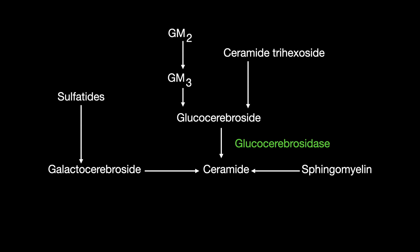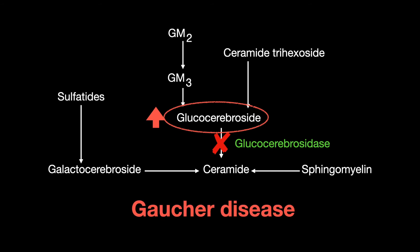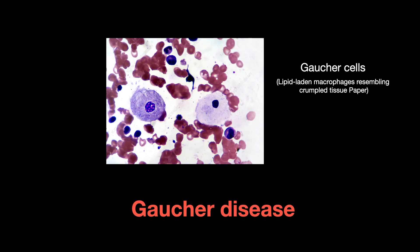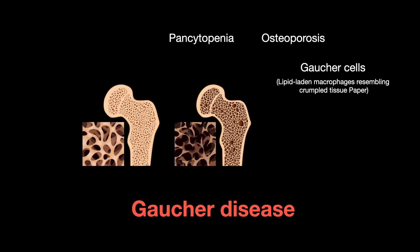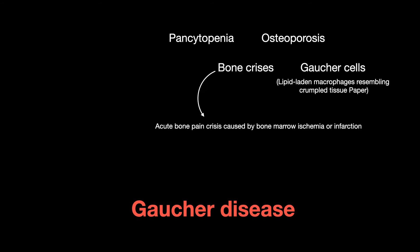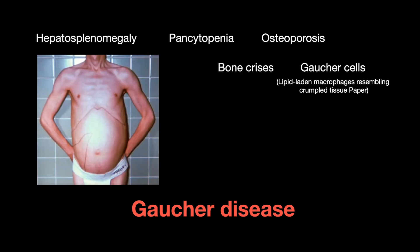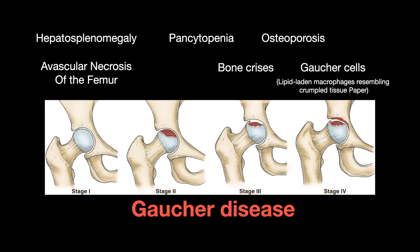Glucocerebrosidase catalyzes glucocerebroside to ceramide, and a deficiency causes glucocerebroside to build up, resulting in Gaucher disease. Named after the Gaucher cells that result — lipid-laden macrophages that resemble crumpled tissue paper. Symptoms include pancytopenia (a decrease in red and white blood cells and platelets), osteoporosis, bone crisis, hepatosplenomegaly, and avascular necrosis of the femur.